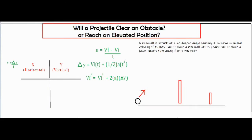In this video I'm going to be talking about whether a projectile will clear an obstacle or reach an elevated position. A baseball struck at 60 degrees causing it to have an initial velocity of 15 meters per second — will it clear an 8 meter wall at the peak of its flight, and will it clear a fence that's 17 meters away if the fence is 2 meters tall?